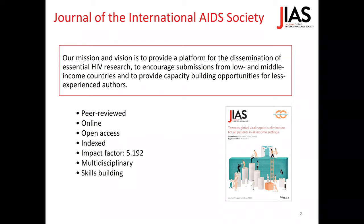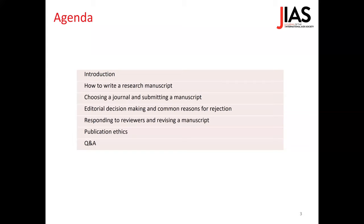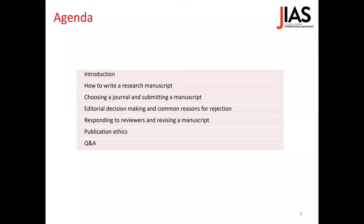We are a multidisciplinary journal, meaning that we publish HIV research articles in all disciplines, from basic science, clinical science, to social science or epidemiology. We provide workshops and webinars for capacity-building opportunities, usually linked to IAS conferences. Today we will discuss how to write a research manuscript, choosing a journal and submitting, editorial decision making, common reasons for rejection, how to respond to reviewers, how to revise your manuscript, and publication ethics. At the end, there will be room for Q&A.